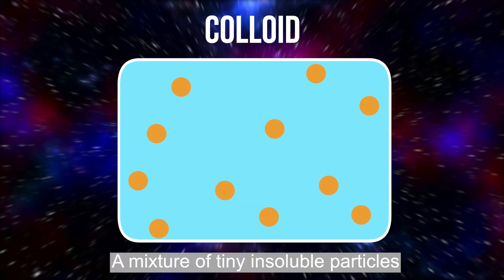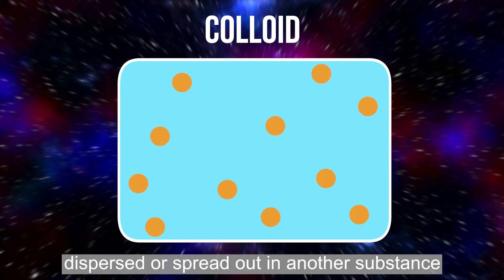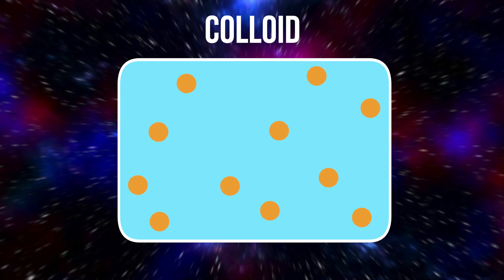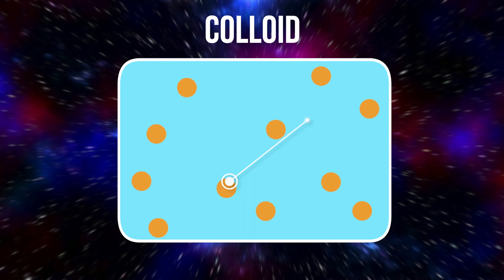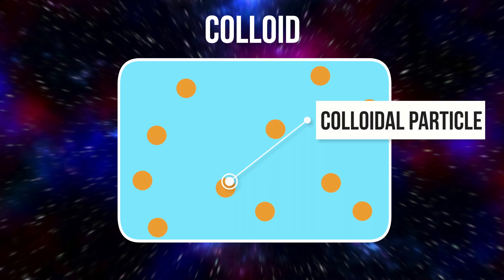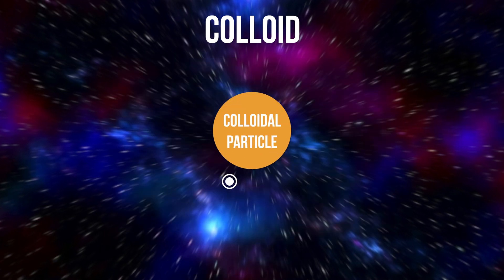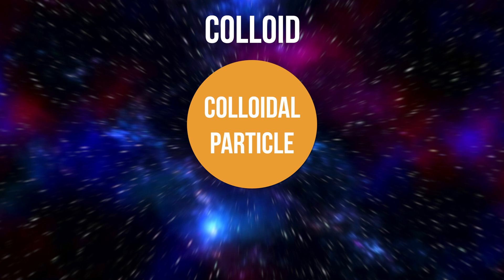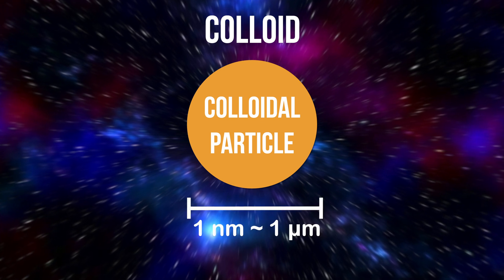Colloid is a mixture of tiny insoluble particles dispersed, or spread out, in another substance. These particles are called colloidal particles and they must not settle. The size of colloidal particles can range from one nanometer to one micrometer.